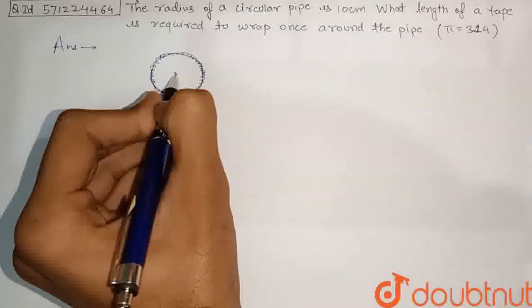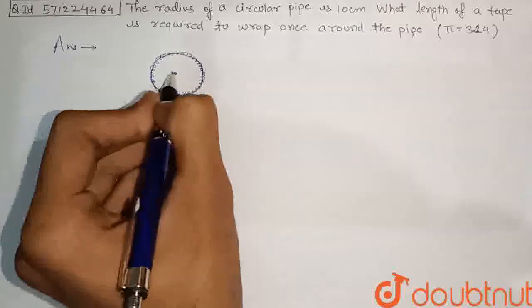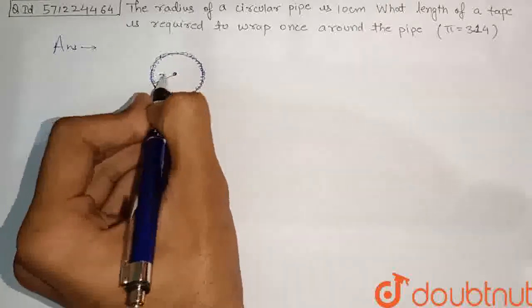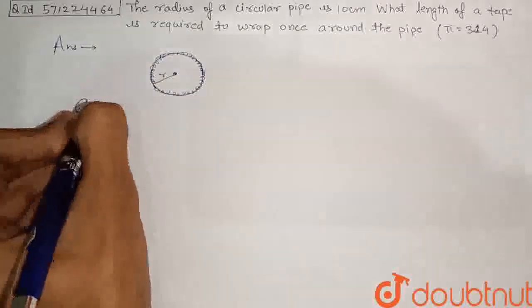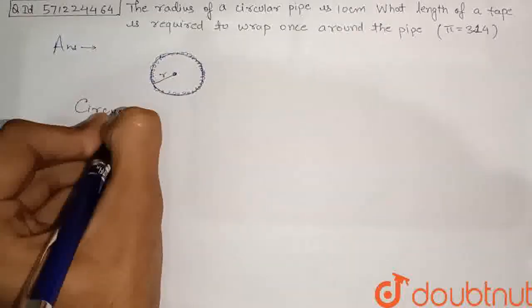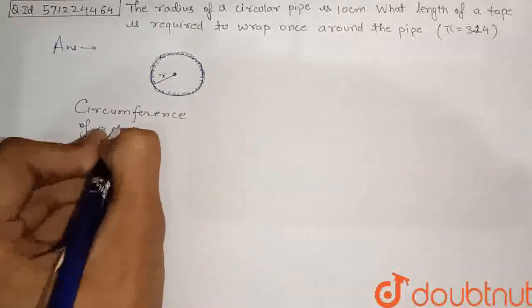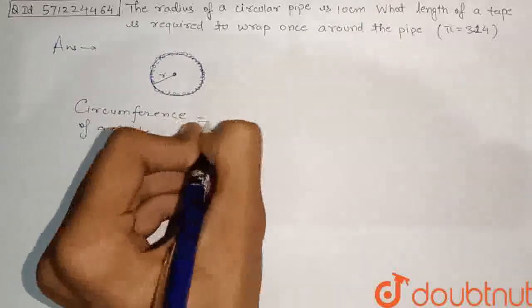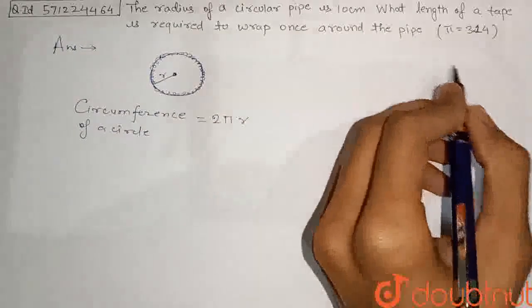This is the length. And we can say that if it is circular, so the cross section is a circle. If this is the radius, then the circumference - that is this whole length - the circumference of a circle is given by 2 pi r. And the value of pi is given to us.